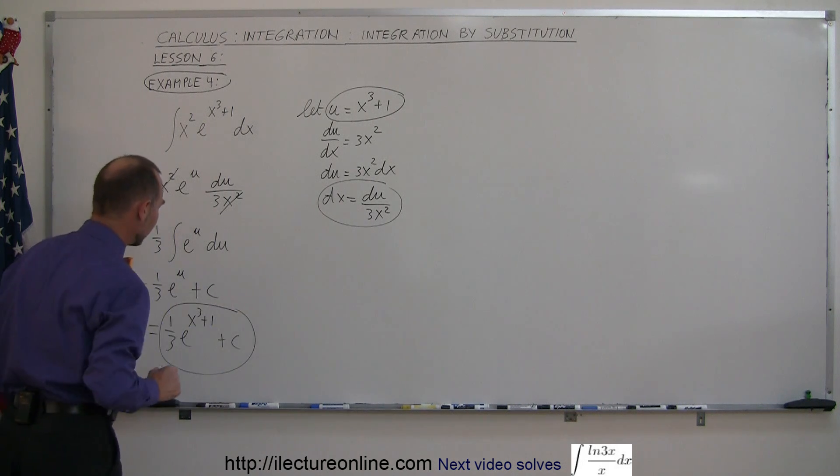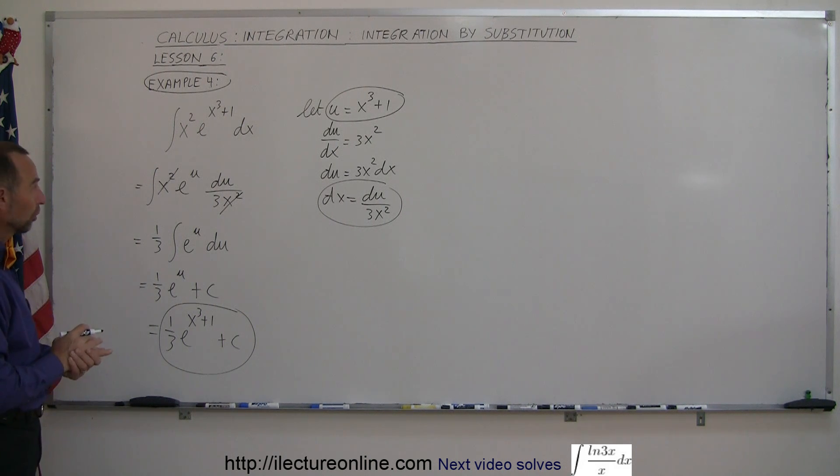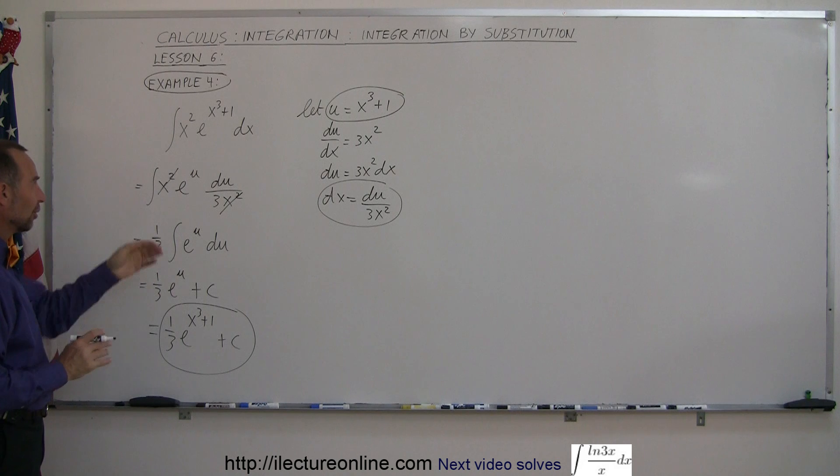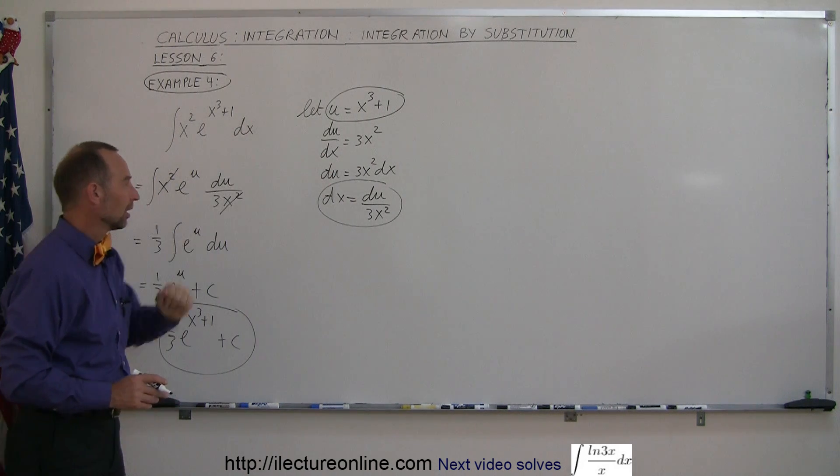That's the final form of the answer of the integral of x squared e to the x cubed plus 1 dx. So even though it looks kind of mean and ugly when you start out like this, when you substitute in for u, then it becomes a pretty easy integral.